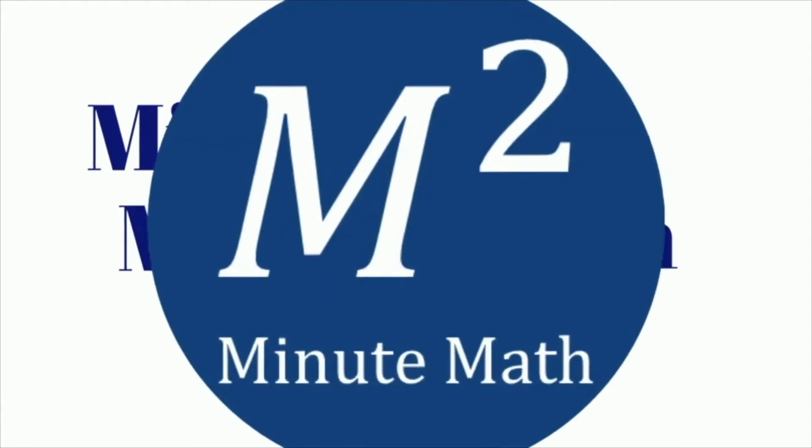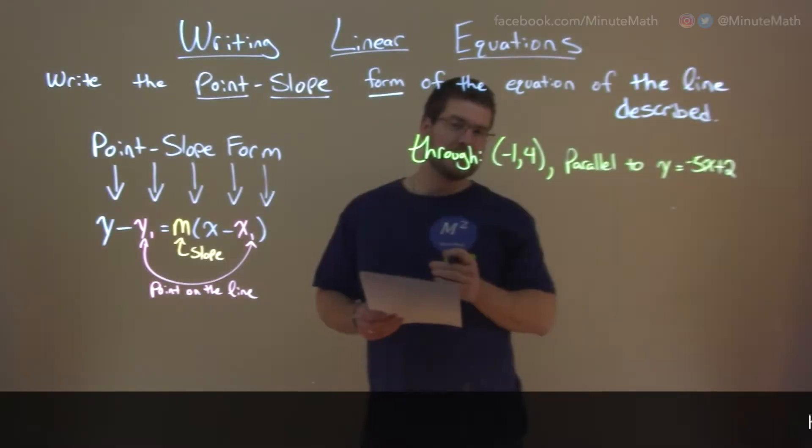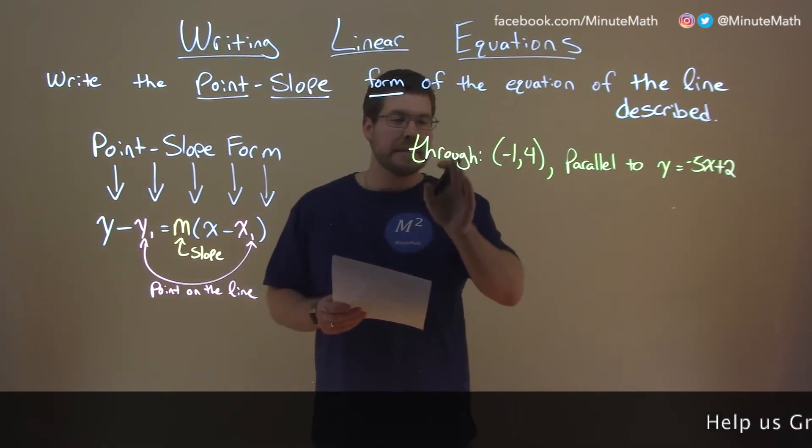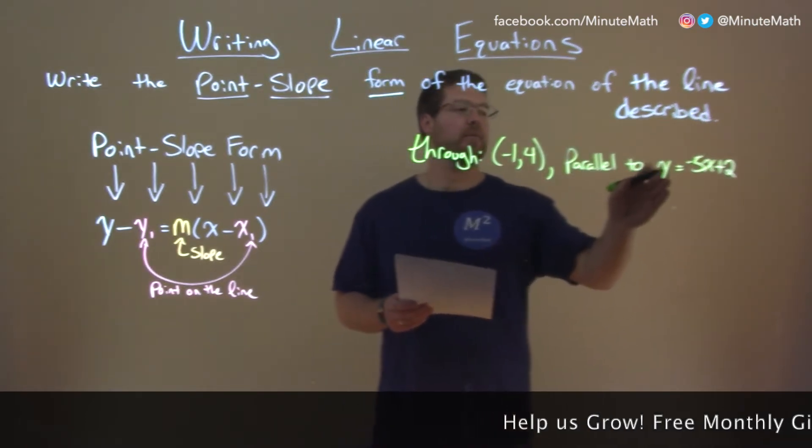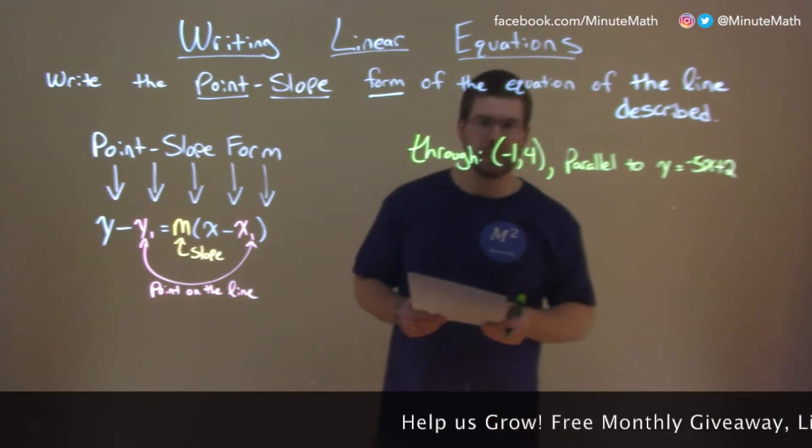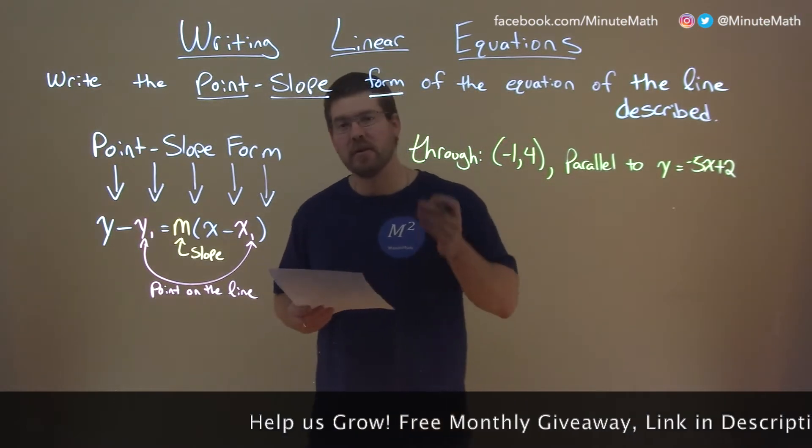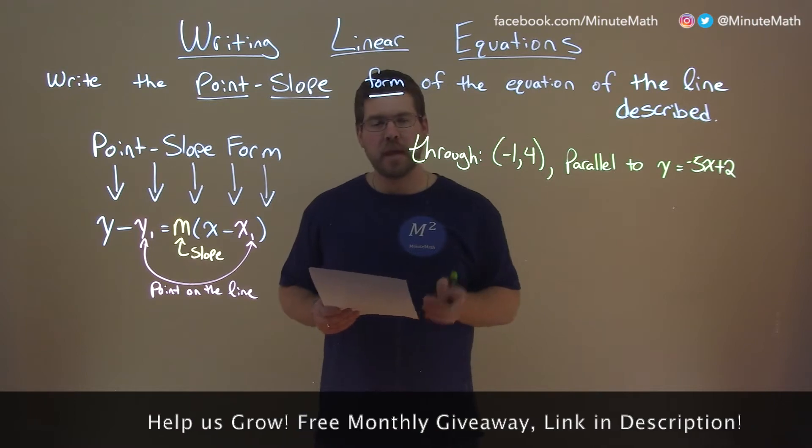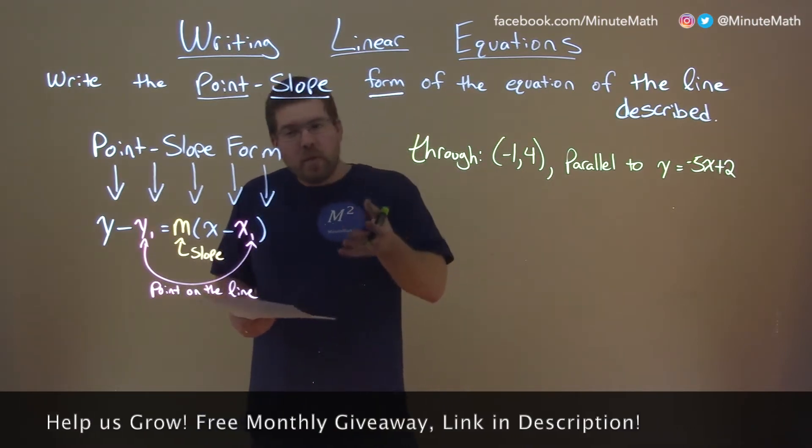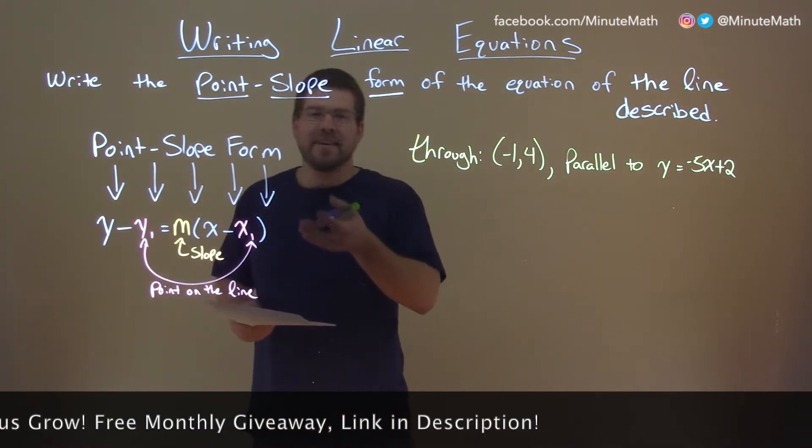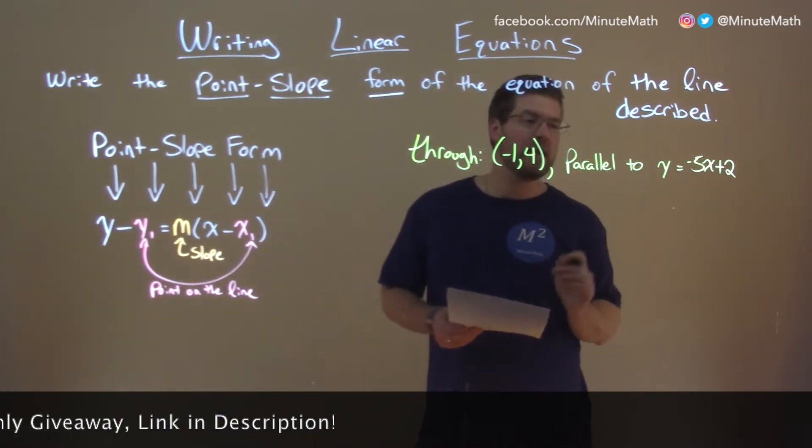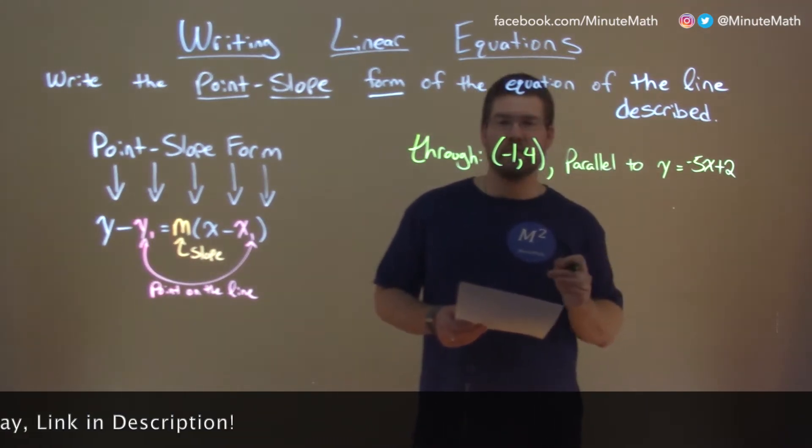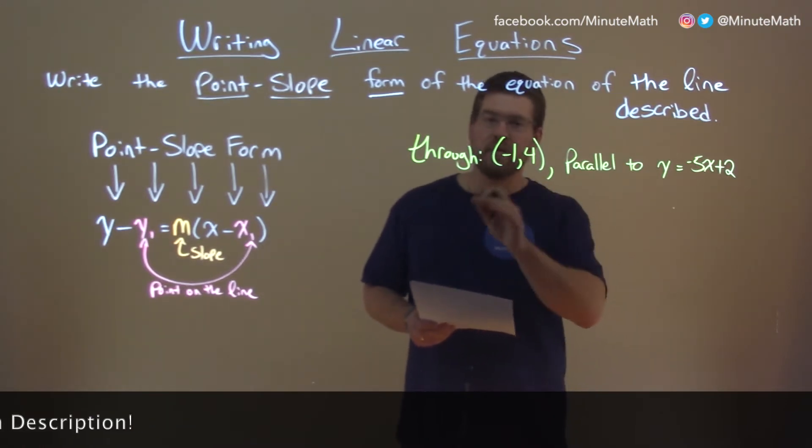If I was given this problem through negative 1 comma 4, and it's parallel to y equals negative 5x plus 2, then we want to write this equation in point slope form. Well, what do we know about point slope form? We have a point and a slope. We have a point here, we have an equation that tells us parallel to y equals negative 5x plus 2. Parallel lines have the same slope.